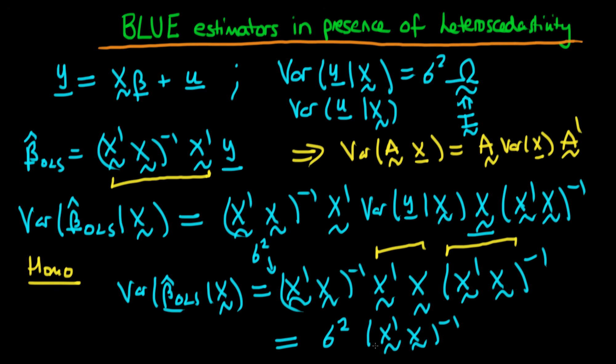In the next video, I'm going to derive the expression for beta hat OLS in the presence of heteroscedastic errors, and I'm going to compare the two expressions.